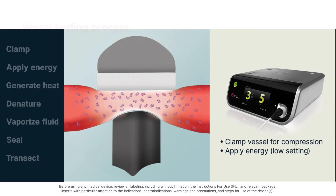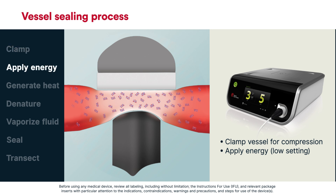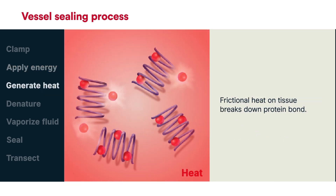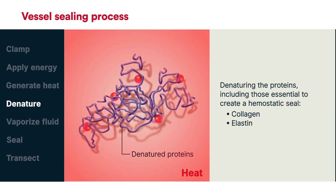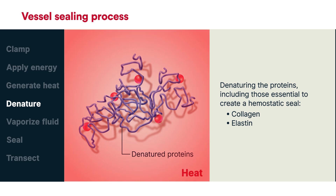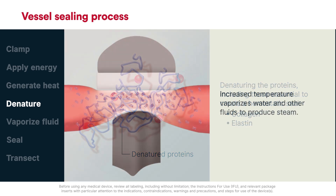It begins with clamping on the vessel to achieve compression. The surgeon applies energy at a low power setting, which maximizes coagulation. Frictional heat on tissue breaks down protein-hydrogen bonds, denaturing proteins, including those essential to create a hemostatic seal, such as collagen and elastin.